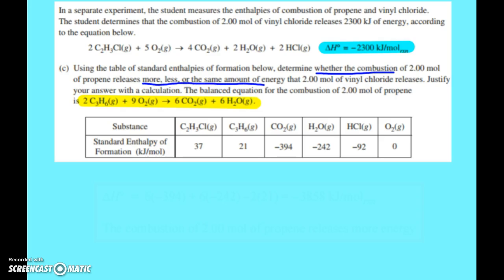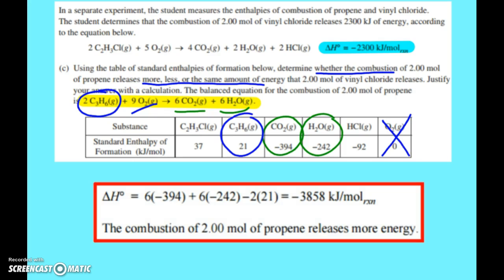So when we have our delta H's, it's just products minus reactants. So I've got six carbon dioxides, six waters in my products. My reactants, I've got two of the C3H6s and nine oxygens, but oxygens are zero. And so when you play plug and chug, you find that this delta H is negative 3858 kilojoules per mole. And since it wanted you to compare them, please make sure you answer all parts of the question. This combustion releases more energy than the vinyl chloride one.